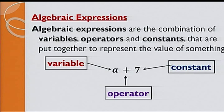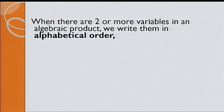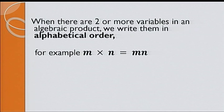When there are two or more variables in an algebraic product, we write them in alphabetical order. For example, m multiplied by n is equal to mn. mn is written in alphabetical order. Note, we usually omit writing 1 before a variable. For example, 1 multiplied by a is equal to a multiplied by 1 is equal to a and not 1a.